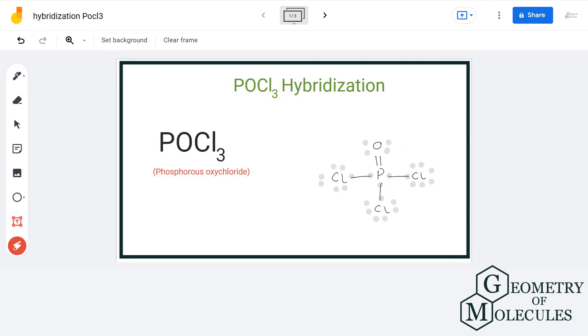Hello guys, welcome back to our channel. In this video, we will discuss the hybridization of POCl3. It is the chemical formula for phosphorous oxychloride.